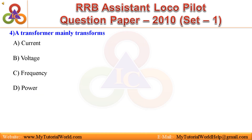Question 4: A transformer mainly transforms — A. Current, B. Voltage, C. Frequency, D. Power. Answer is Voltage.